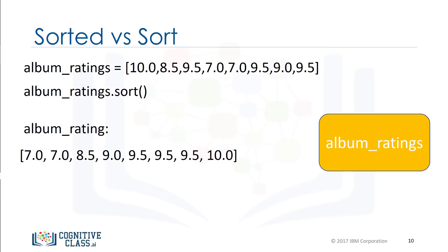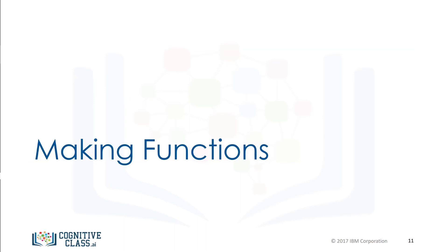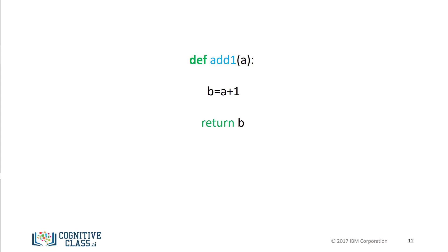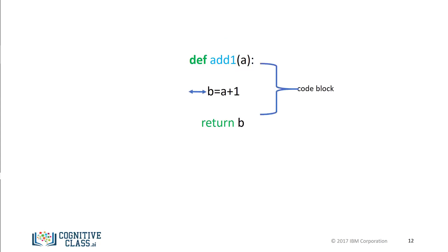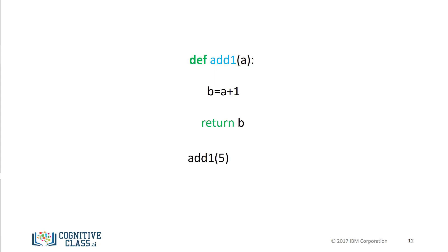Now that we've gone over how to use functions in Python, let's see how to build our own functions. This is an example of a function in Python that returns its input value plus one. To define a function, we start with the keyword def. The name of the function should be descriptive of what it does. We have the function formal parameter a in parentheses, followed by a colon. We have a code block with an indent — for this case, we add 1 to a and assign it to b, then we return the value of b. After we define the function, we can call it. The function will add 1 to 5 and return a 6. We can call the function again, this time assigning it to variable c. The value for c is 11.